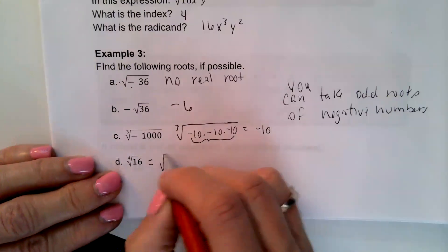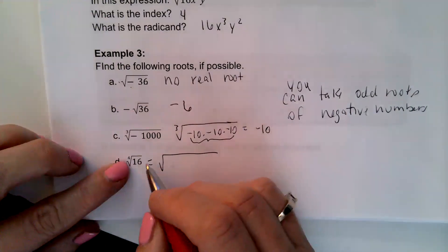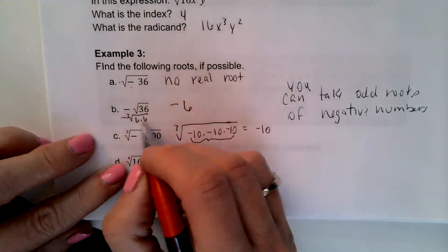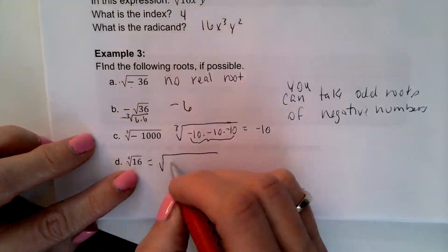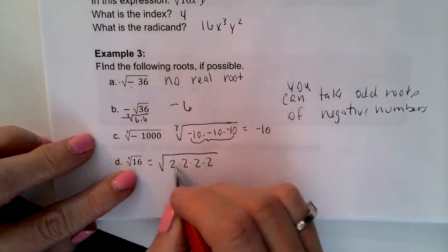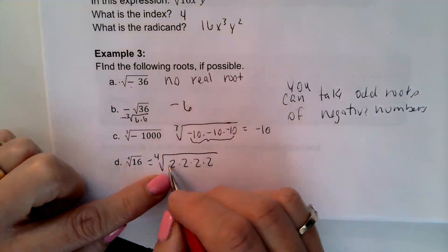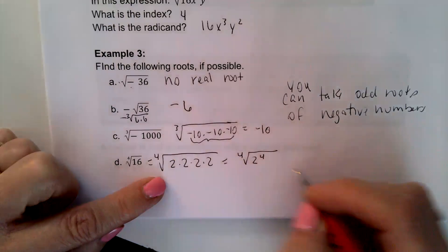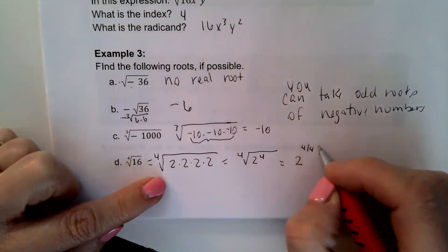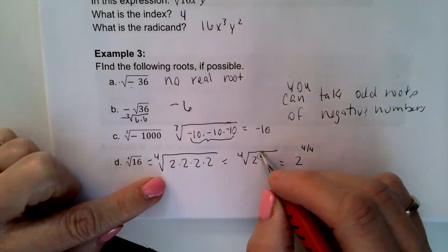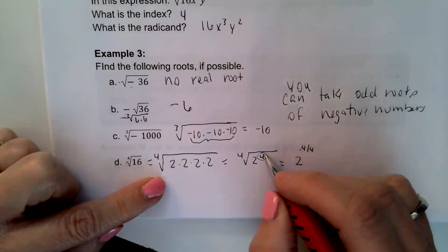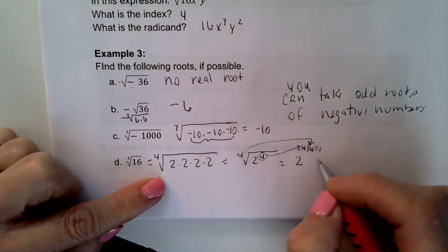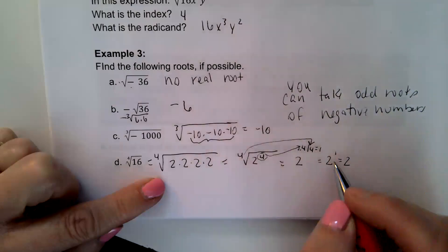The fourth root of 16: the index tells me the group size. I'm looking for groups of four, so I can rewrite 16 as 2 × 2 × 2 × 2 — four twos. So the fourth root of 16 is 2. We can also write it in rational exponent form: the exponent inside the radicand goes to the numerator, and the index becomes the denominator. Four over four equals one, so 2 to the one equals 2.